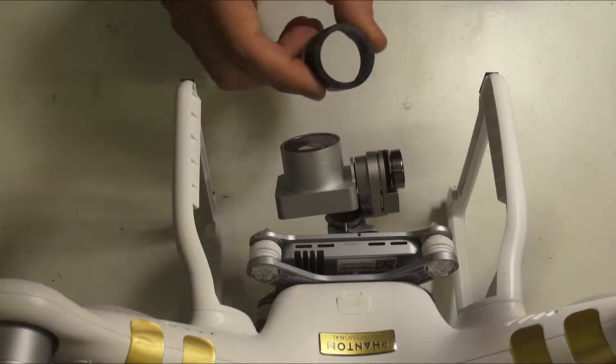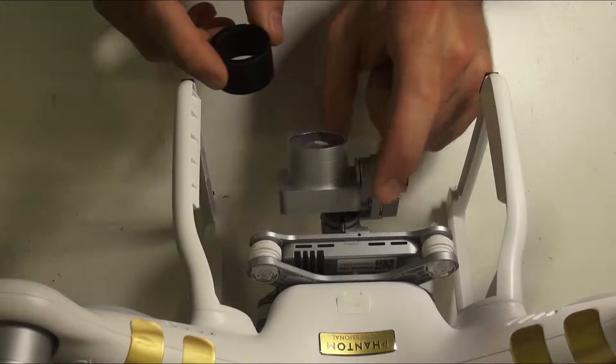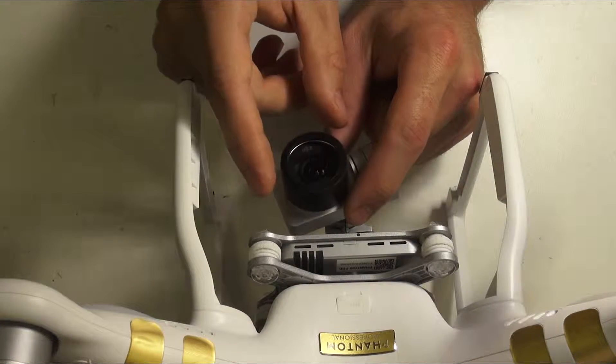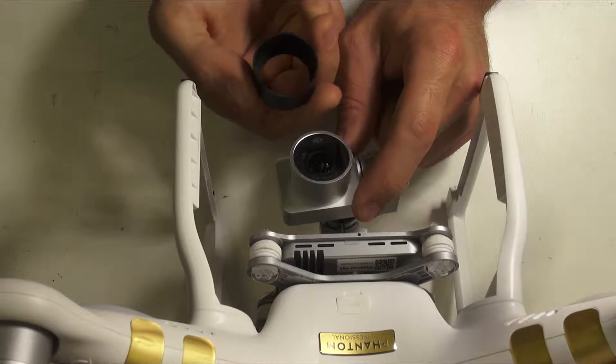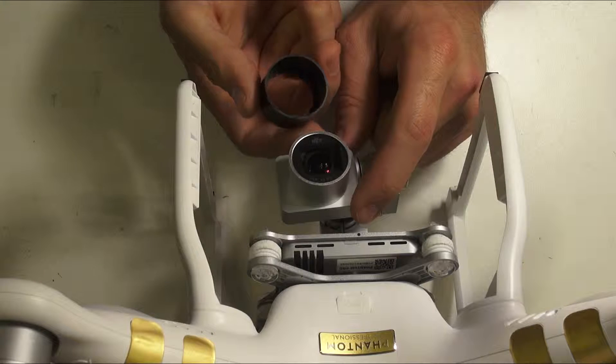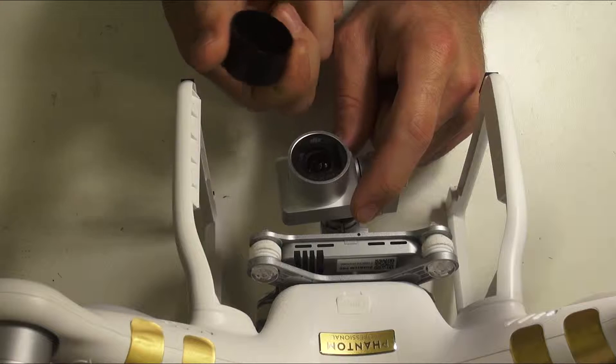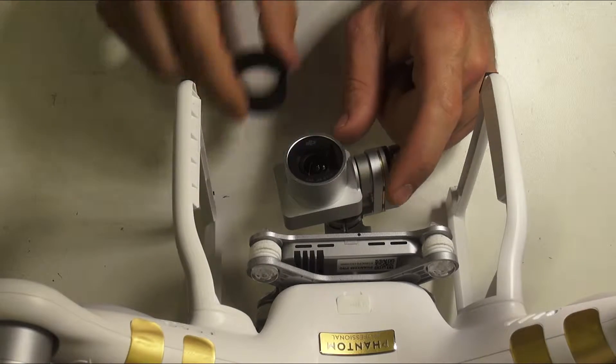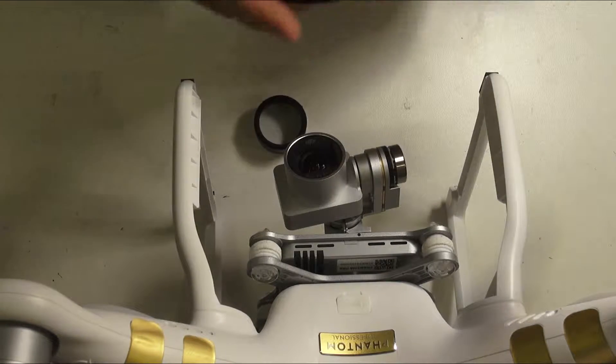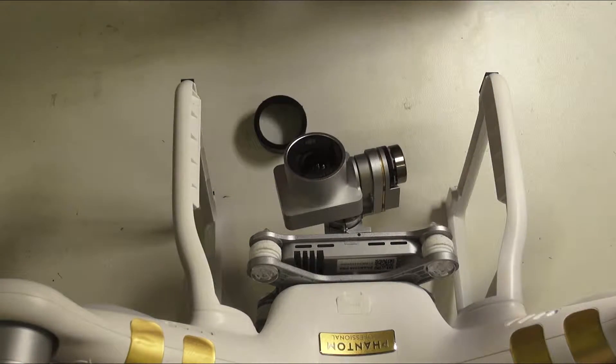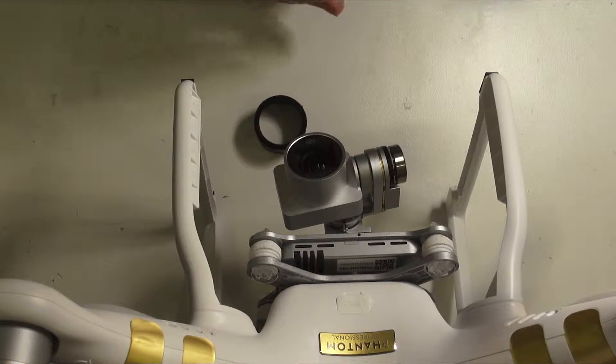There goes my little ND filter holder. It's not tight enough though. I used diameter of 31.5mm, but I guess it's actually 31mm, maybe even less. So I think this will need some electrical tape, and then it will stick on there.